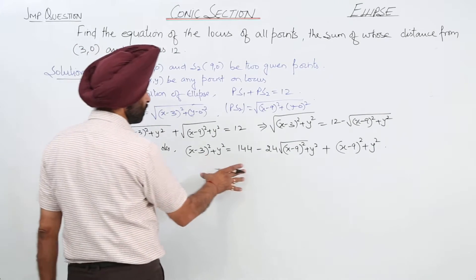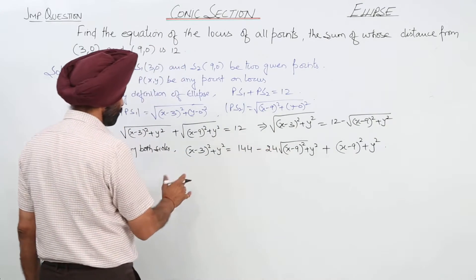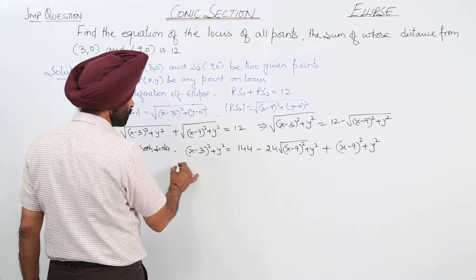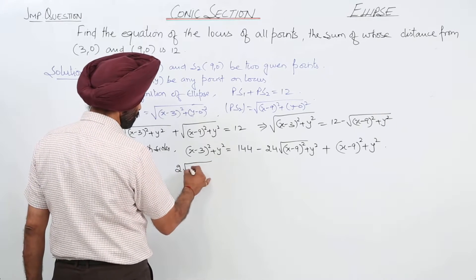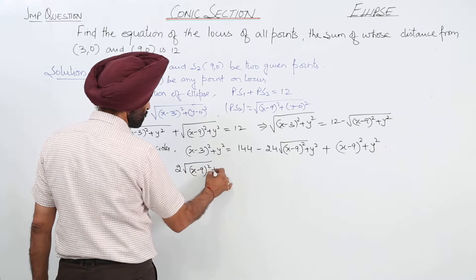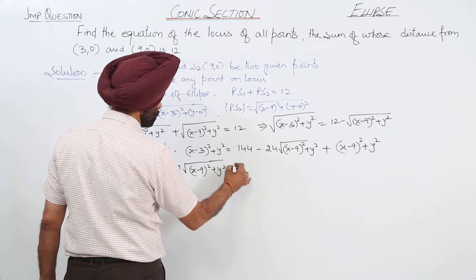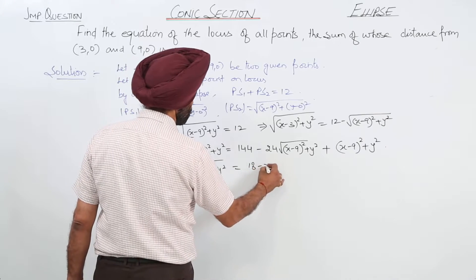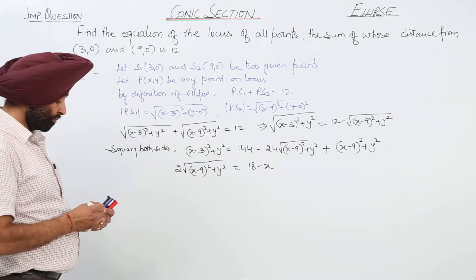On solving this, we get: 2 times square root of (x minus 9) whole square plus y square is equal to 18 minus x.